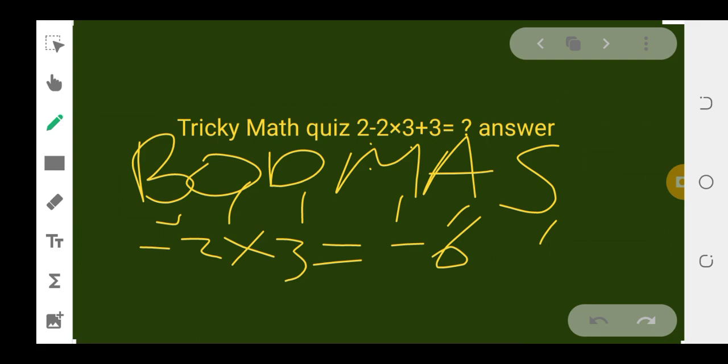The next thing according to BODMAS is to do addition. So this 2 plus this 3 gives us 5. 2 + 3 = 5.